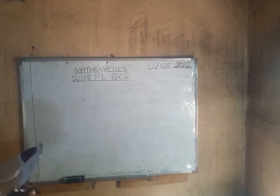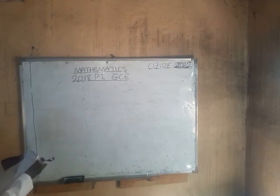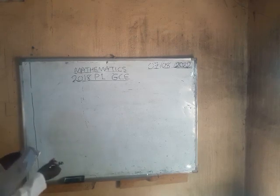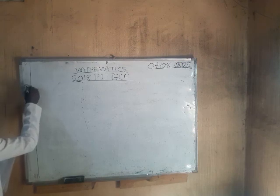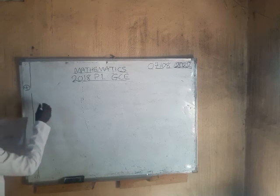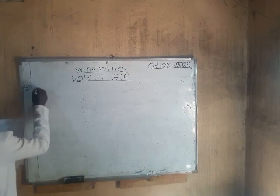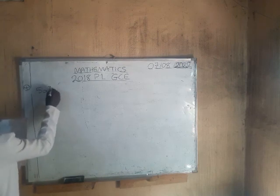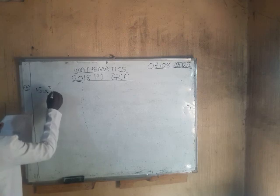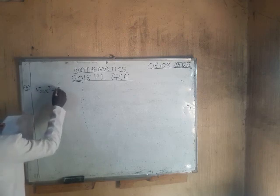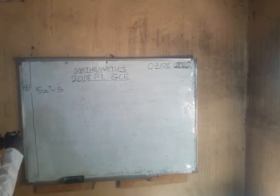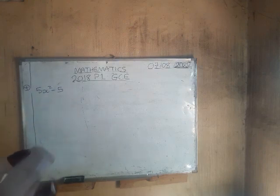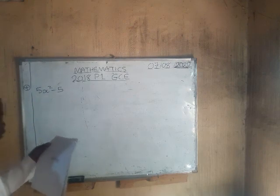Question 4: factorize 5x squared minus 5 completely.